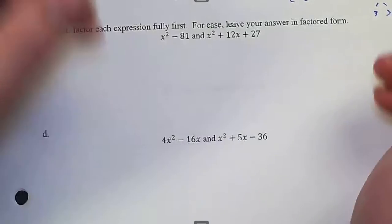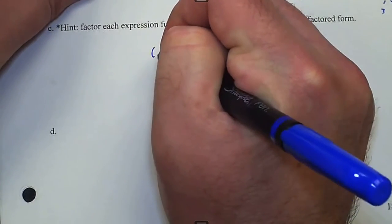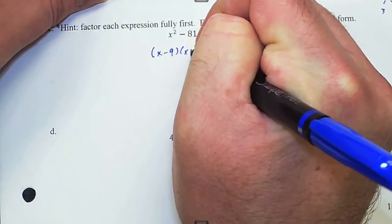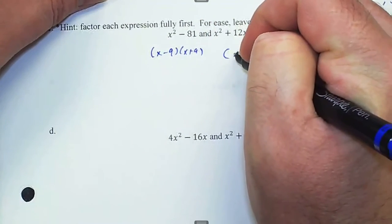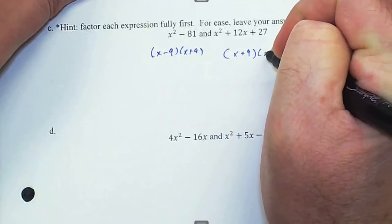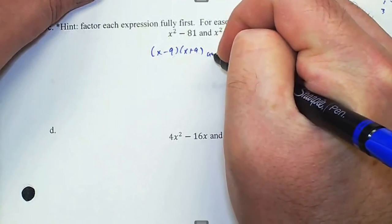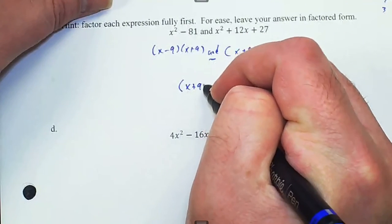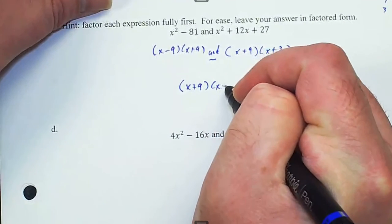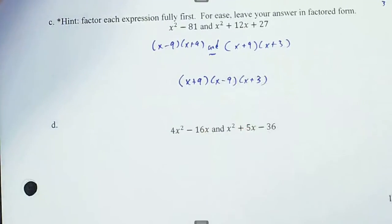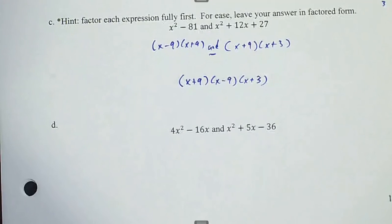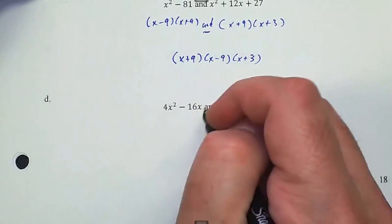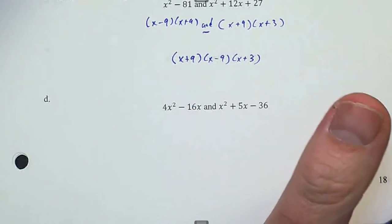We can find the least common multiple of polynomials as well — same process, factor first. x² − 9 factors as x + 9... wait, that's x minus 9 times x plus 9, and the other polynomial factors as x plus 9 and x plus 3. To find the LCM we take each base to the highest power it ever occurs — nothing exceeds the first power here.